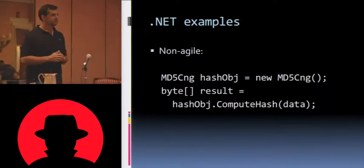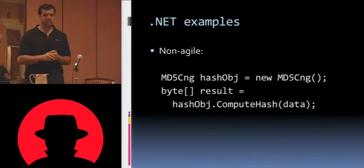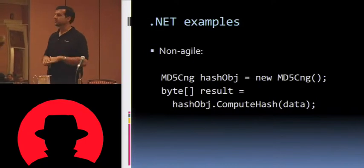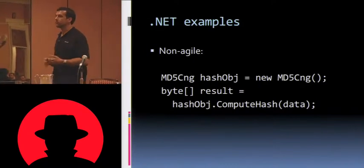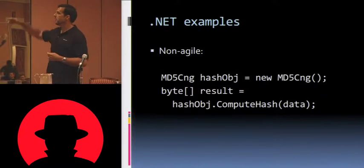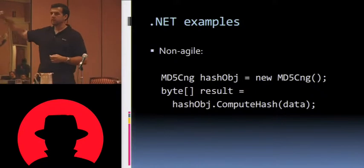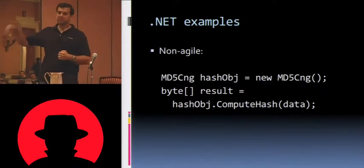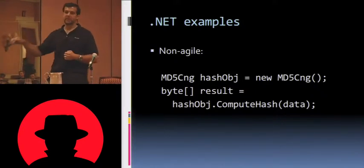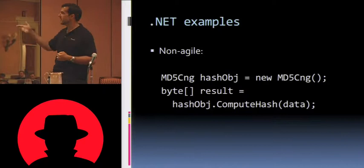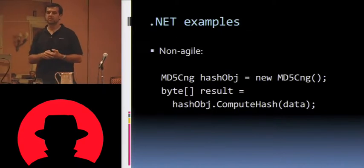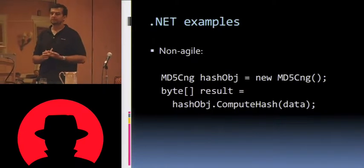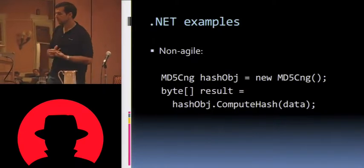90-plus percent of the .NET code I see looks exactly like this, which is really unfortunate because this is not agile in any way. We've hard-coded the algorithm. We've hard-coded the particular implementation of this algorithm. There's nothing we can do to change this besides going into the source code, which is unfortunate.